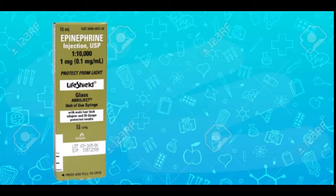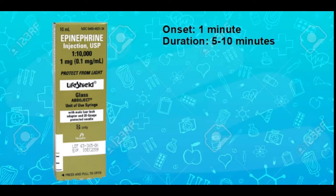The great thing about push dose epi is how quickly it starts to work. The onset is about one minute and the duration, or how long it lasts, is about five to ten minutes. That's not particularly long, but it's long enough to take the time to mix up whatever long-term solution you're going to use. Right now this is all about speed, which means the math is going to have to be fast too.